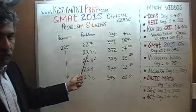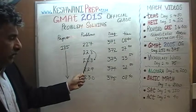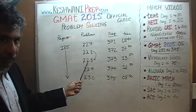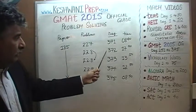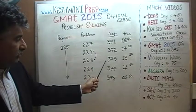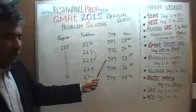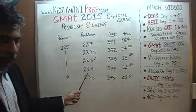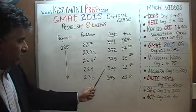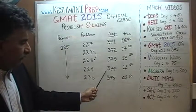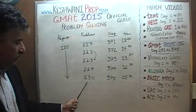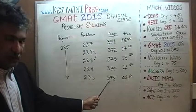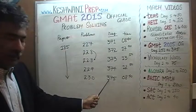Solution to problem number 228 was presented twice, two different methods — one on day number 372, and again we redid the problem on day number 373. The penultimate problem, problem number 229, was done on day number 374. And finally, the last problem, problem number 230 — you will find the solution to that problem on day number 375.